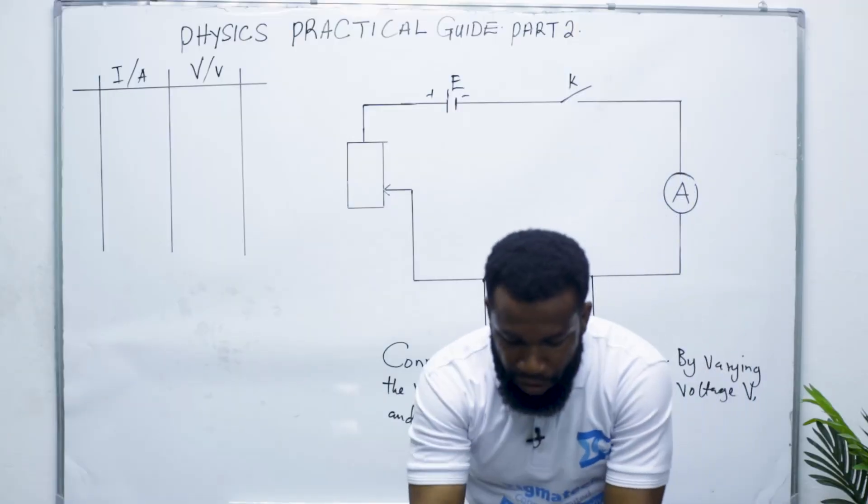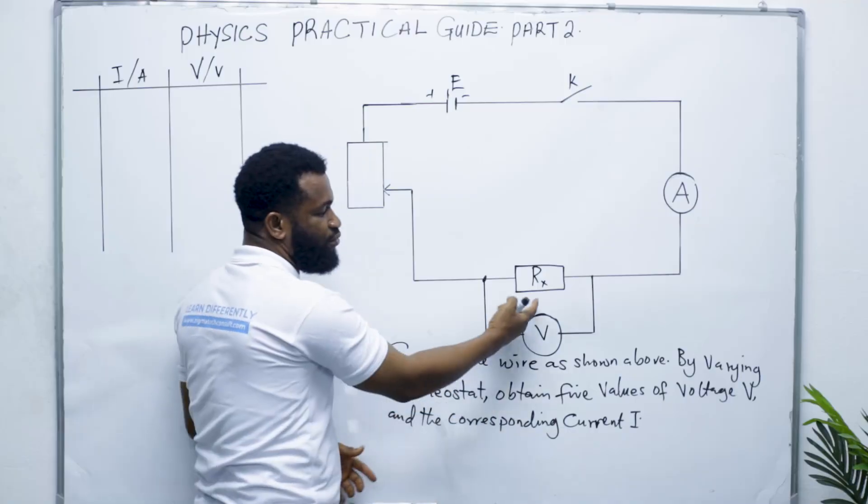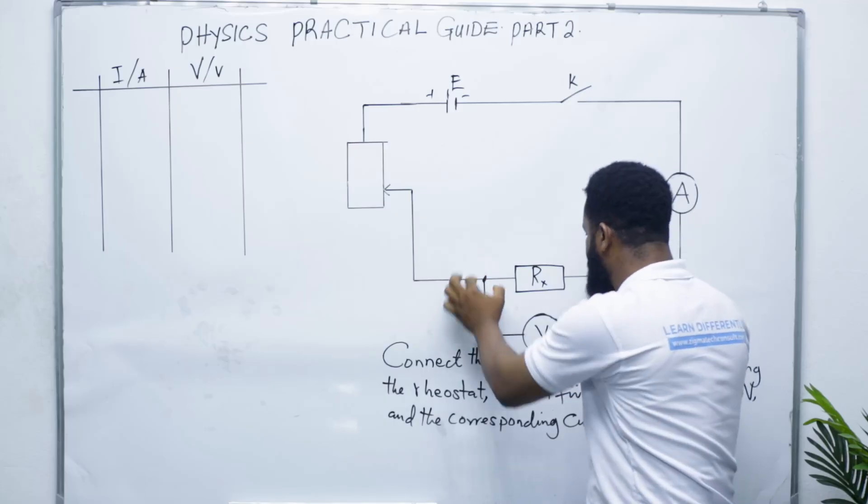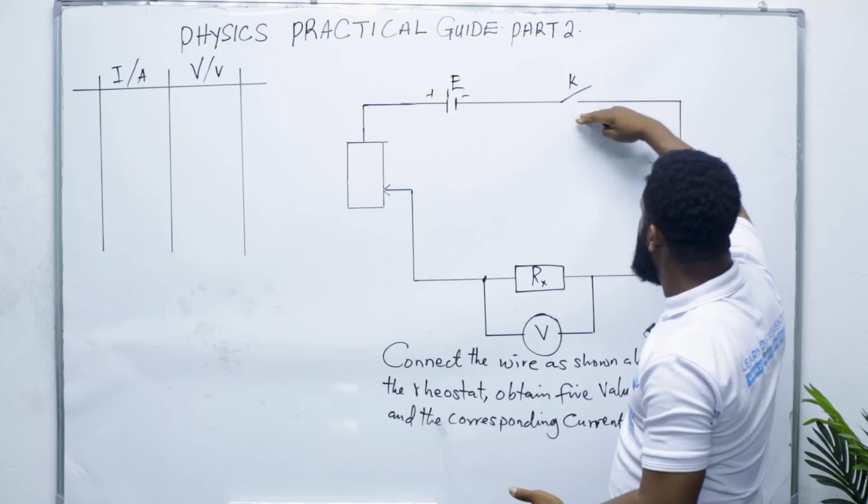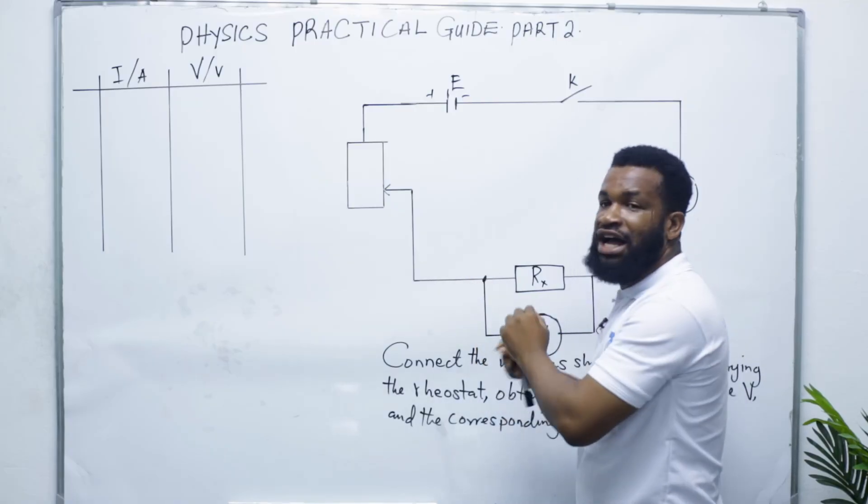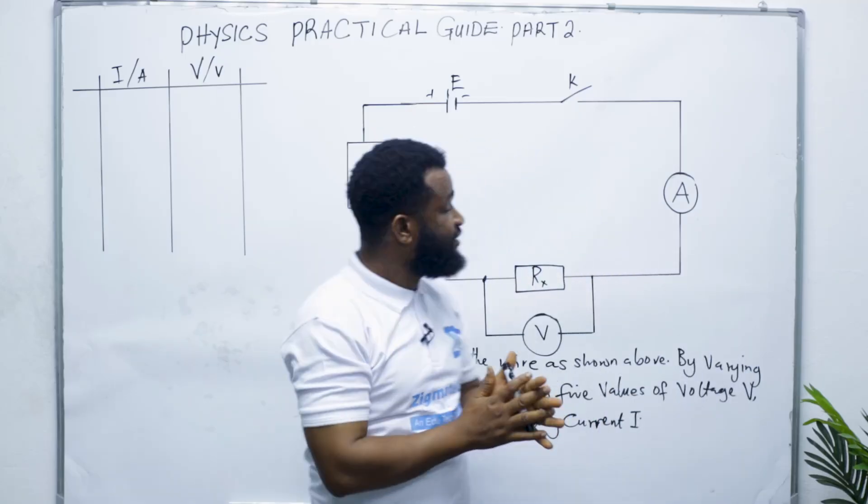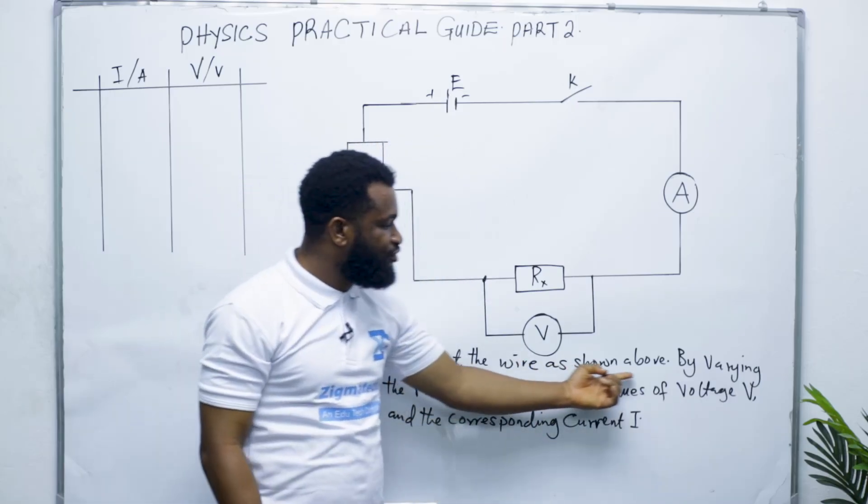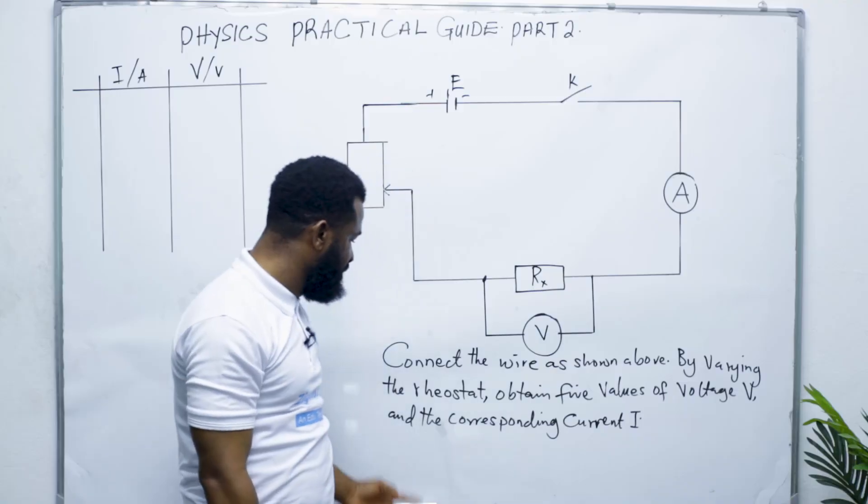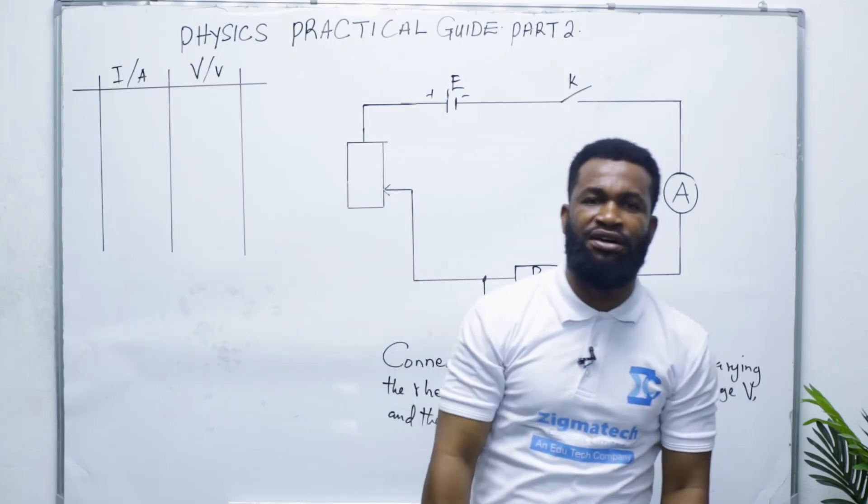But you will always connect the voltmeter in parallel. What I mean by parallel: you target what you want to measure. When you target what you want to measure, you connect the voltmeter across it, not on the line. This is ammeter in series, while voltmeter must be connected in parallel and voltmeter is always targeting a resistor to measure. So what we are going to do is connect the wire as shown above, then by varying the rheostat, obtain five values of voltage V and the corresponding current I.